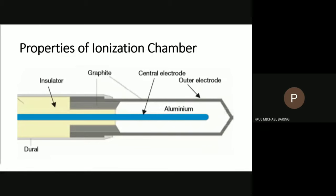The central electrode, made of aluminum, is responsible for collecting free electrons when ionization of gas occurs. The outer electrode collects the positive ions. The electrons and positive ions must be separated to avoid the recombination effect. An insulator is also used to avoid leakage in the electric field.